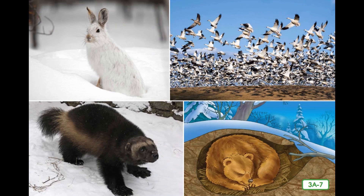In winter, some animals whose food source is affected by the change in climate migrate, or leave for warmer places. These animals sense the change in daylight and temperature and begin their annual migration. Migration is part of a yearly cycle of changes. Some birds travel long distances to their winter homes, preparing by eating lots of food to store as energy for their journey. Mammals such as caribou and elk migrate across vast expanses of land, and even fish migrate in winter in search of warmth and food.